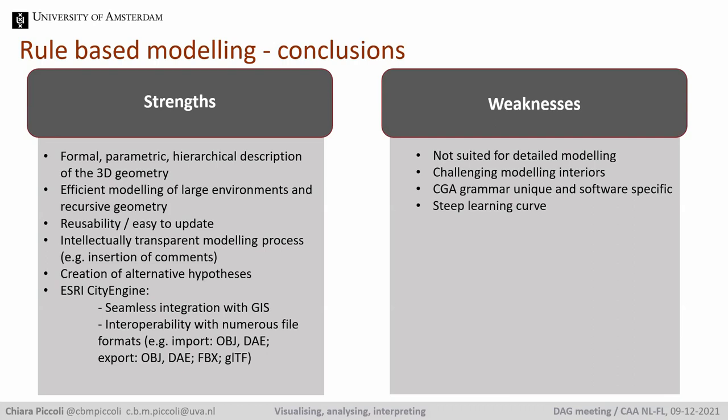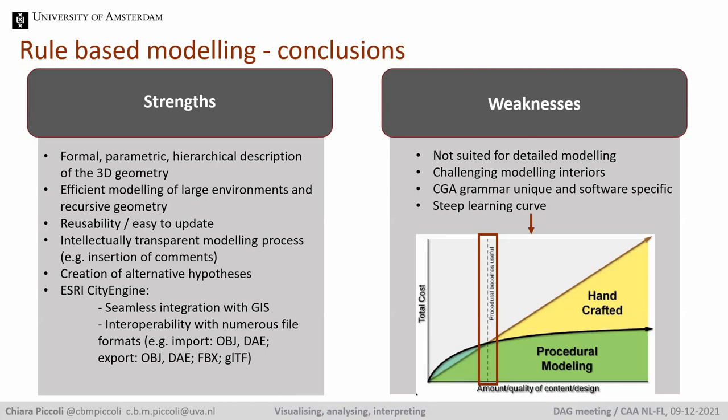Moreover, the CGA grammar is software-specific, so you need CityEngine to interpret the code. To be clear, you can read the rules with any text editor, but to actually visualize the geometry they describe you need CityEngine. Finally, the learning process of rule-based modeling and CityEngine is usually more challenging than learning computer graphics software. There is a certain amount of content creation after which the initial investment of time to write rule files is compensated; otherwise manual modeling is still the best way to go.